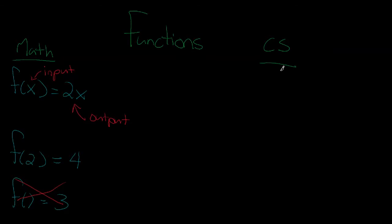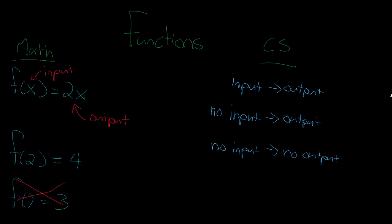Now, in computer science, functions are quite different. Functions can have input - you can have a function that has an input and an output. You can also have a function that has no input yet still has an output. And you're probably guessing where this is going, you could also have a function with no input and no output. When I say output, another word for this is a return value.